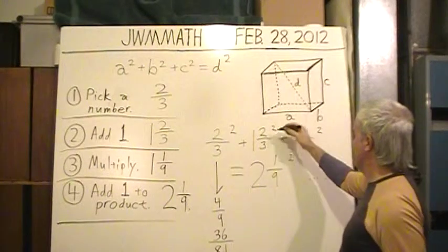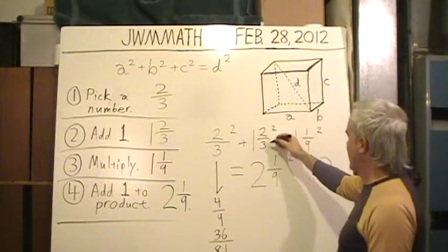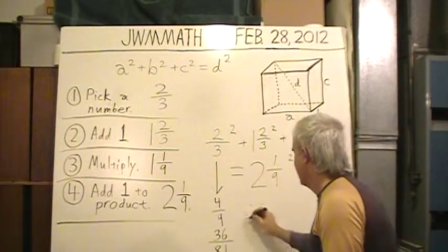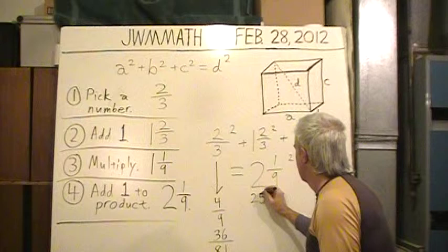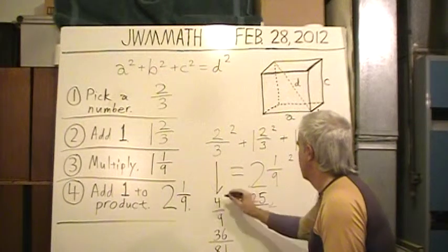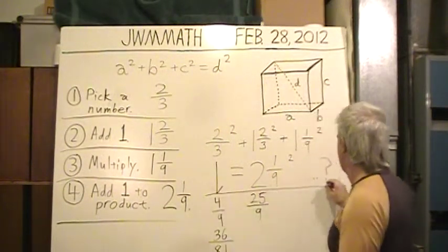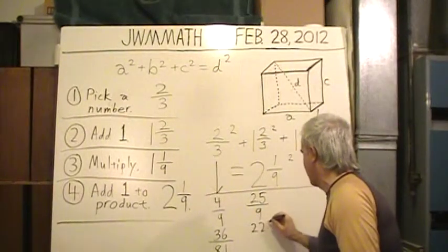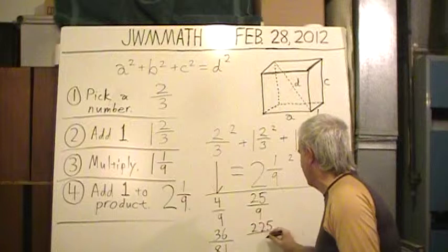One and two-thirds squared. Let's see, that's five-thirds times five-thirds. That is twenty-five-ninths. I'm just going to draw a line here to make this clearer. And how many eighty-firsts is that? Multiply top and bottom by nine. That's two-twenty-five over eighty-one.